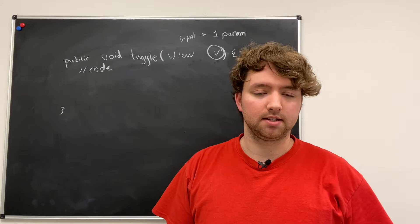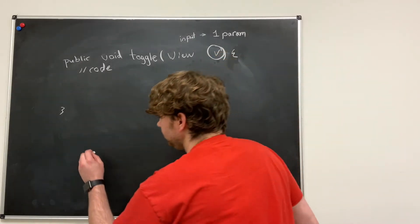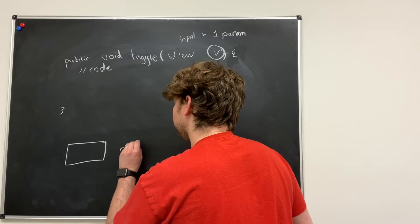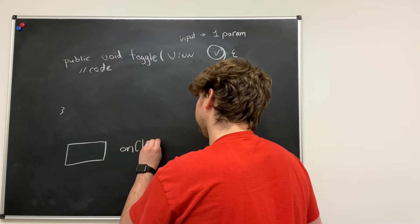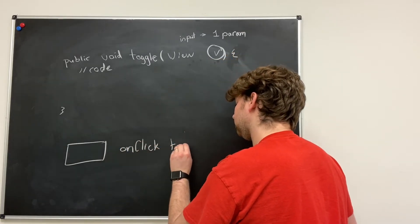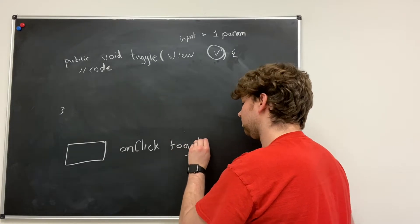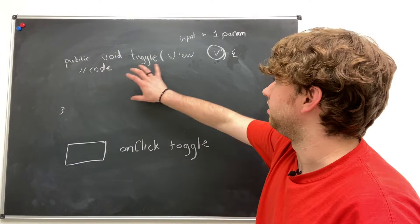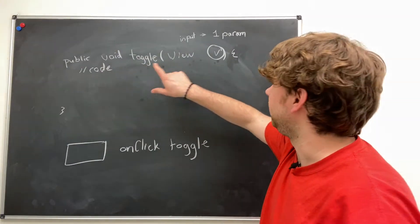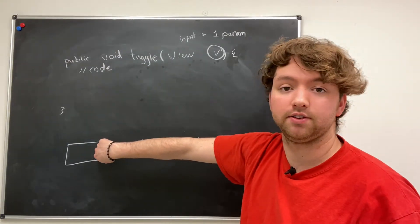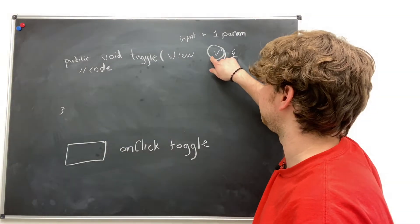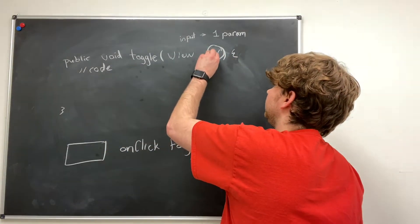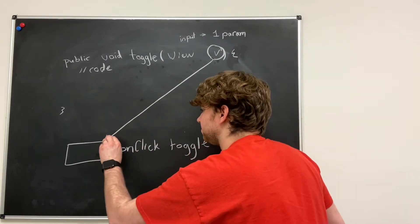And what exactly is this? Well, when we have a button and we set the on click to something like toggle, what happens here is when we click it, this method is executed and this button itself is assigned to this variable. So when we click this button, V refers to this button here.